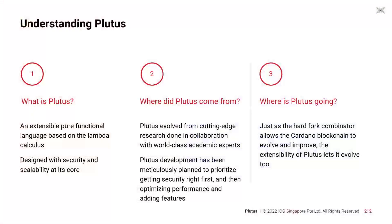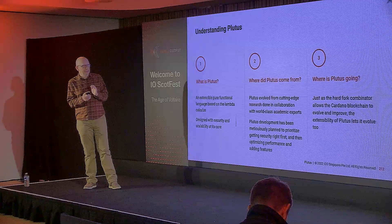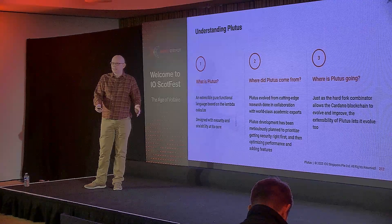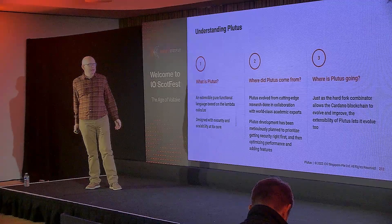For the programming language nerds, Plutus is an extensible, pure, functional language based on the lambda calculus. The key takeaway is that Plutus was designed to be secure — that's the number one goal we started with four years ago. It came from right here in Edinburgh, where world-class researchers in programming languages came together and designed it with security first. We get the security right first, then optimize performance and increase functionality. The goal was to design a very small core language that could be highly secure, and then over time extend it with additional functionality and better tooling.